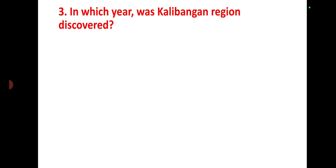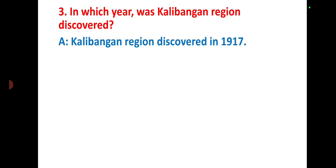The Rigveda mentions the Sapta Sindhu rivers. In which year was the Kalibangan region discovered? The Kalibangan region was discovered in 1917.